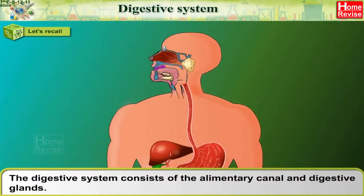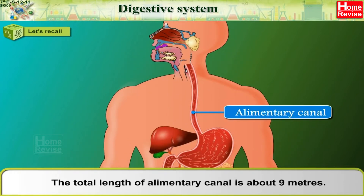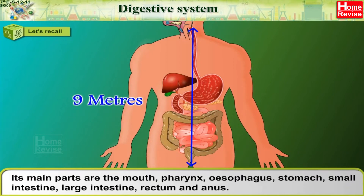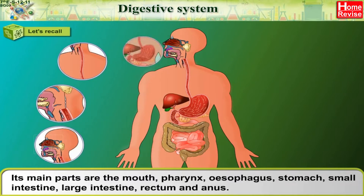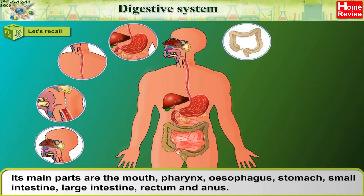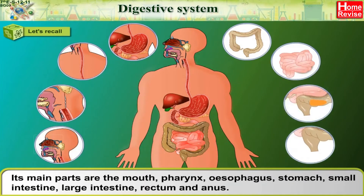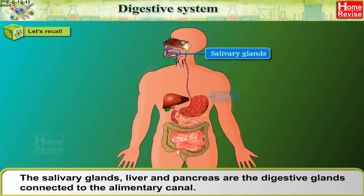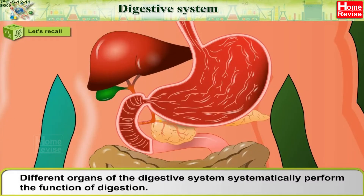The digestive system consists of the alimentary canal and digestive glands. The total length of the alimentary canal is about nine meters. Its main parts are the mouth, pharynx, esophagus, stomach, small intestine, large intestine, rectum, and anus. The salivary glands, liver, and pancreas are the digestive glands connected to the alimentary canal.